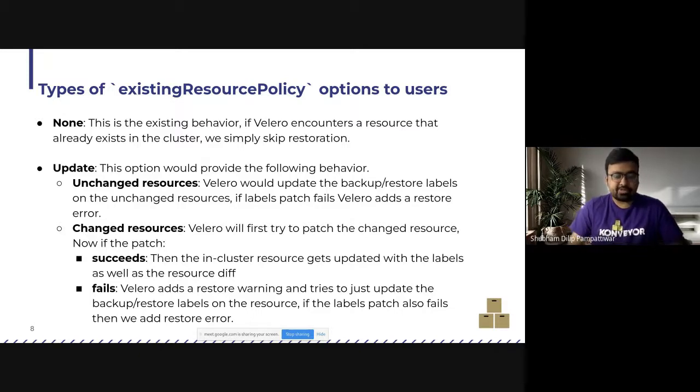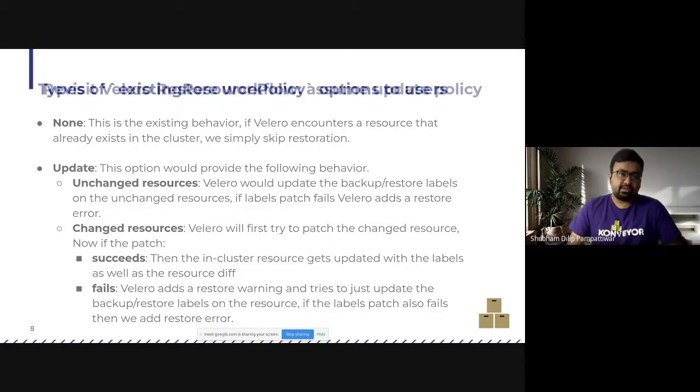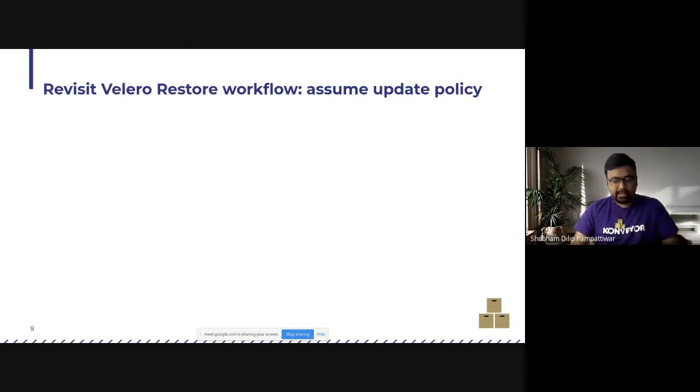So types of existing resource policy which we are exposing to the user right now are none and update. So let's have a look at them. None is the existing behavior of Velero. This preserves the existing workflow. We simply skip the restoration if the resource already exists in the cluster. In case of update, this option would have two kinds of behavior. For unchanged resources and changed resources. So Velero would update the backup restore labels on unchanged resources. If label fails, Velero adds a restore error. For changed resources, Velero will first try to patch the changed resource with the updated resource. If it succeeds, then the in-cluster resource gets updated. If it fails, it just tries to update the labels.